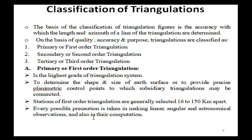Classification of triangulations: the basis of classification is the accuracy with which the length and azimuth of a line of triangulation are determined. Based on quality, accuracy, and purpose, triangulations are classified as: primary or first order, secondary or second order, and tertiary or third order. Primary or first order triangulation is the highest grade of triangulation system, used to determine the shape and size of the earth's surface or to provide precise planimetric control points to which subsidiary triangulations may be connected.